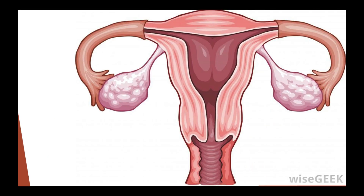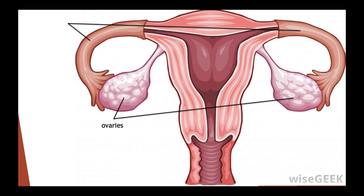The female reproductive system consists of two ovaries, two oviducts or fallopian tubes, a uterus and a vagina. These are the main internal structures of the female reproductive system.